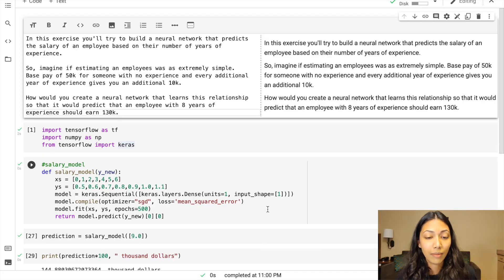So guys, I've created this Google Colab file called Salary Linear Regression. I'm going to leave a link for that in the description box below, so you guys can actually do this along with me. So in this exercise, you'll try to build a neural network that predicts the salary of an employee based on their number of years of experience. So imagine if estimating an employee was as extremely simple. Base pay of 50k for someone with no experience and every additional year of experience gives you an additional 10k. How would you create a neural network that learns this relationship so that it would predict that an employee with eight years of experience should earn $130,000.